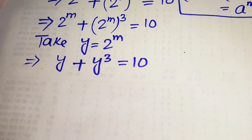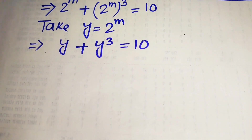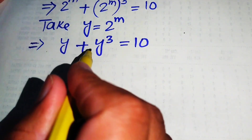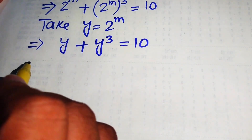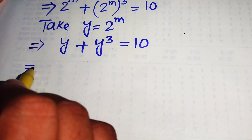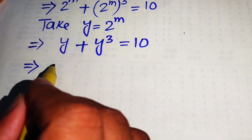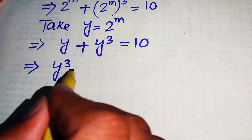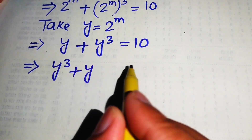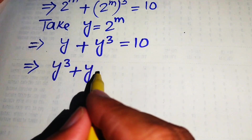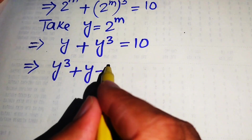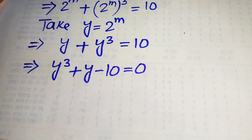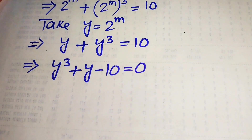In the next step we rearrange the terms because this equation is cubic in the variable y. We rearrange and write it as y cubed plus y, and moving 10 to the left-hand side it becomes minus 10 equals 0.